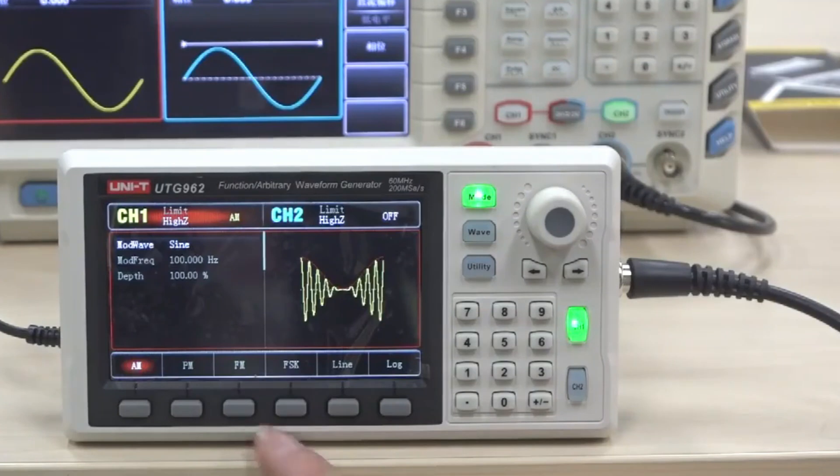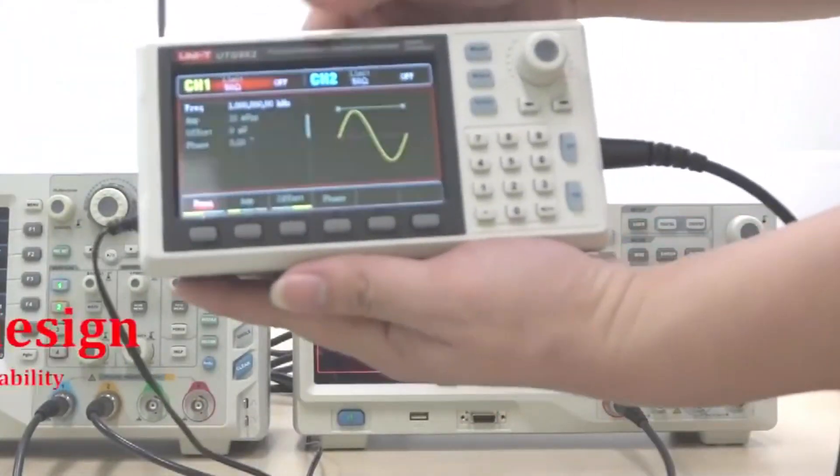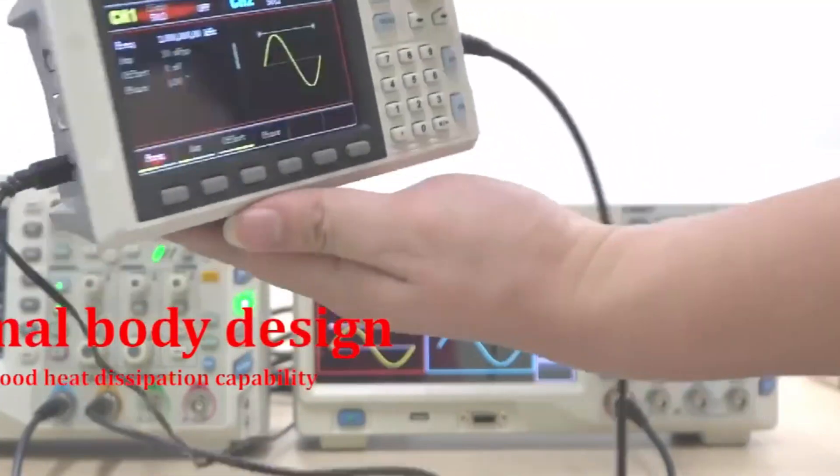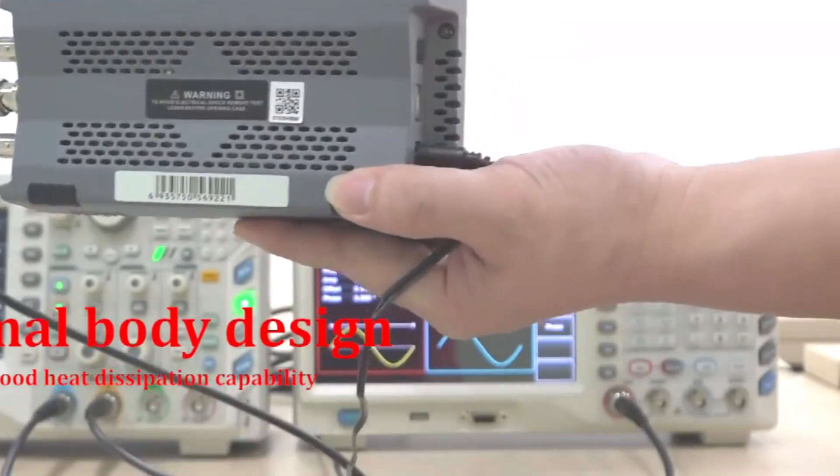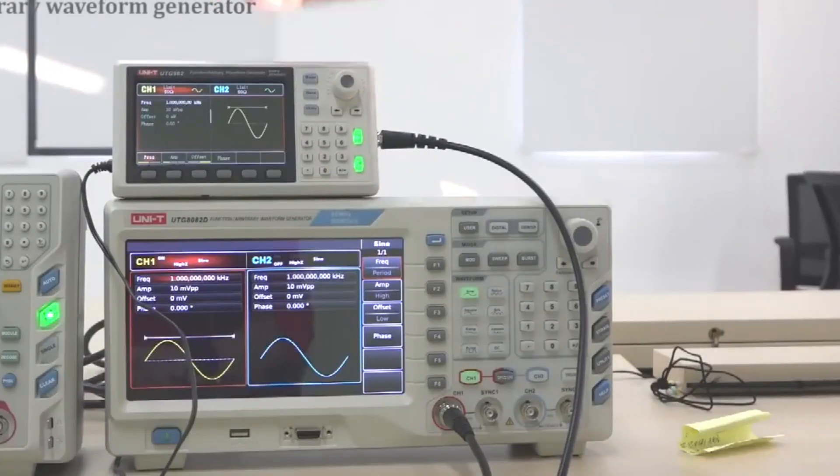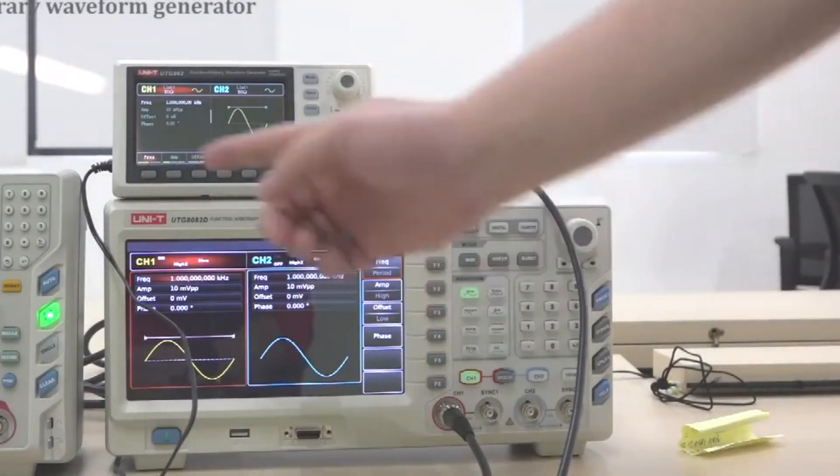The 6-digit frequency counter ensures high precision and 14-bit vertical resolution enhances signal accuracy. The dual channels enable simultaneous generation and control of multiple signals. The user-friendly interface features a 4.3-inch TFT LCD with a multi-language menu, providing a clear display and straightforward navigation.